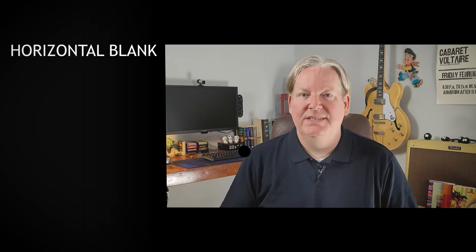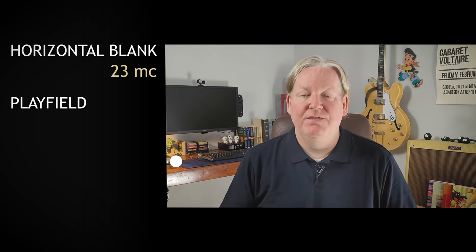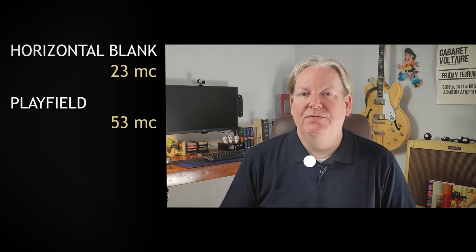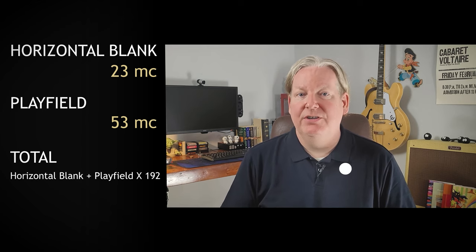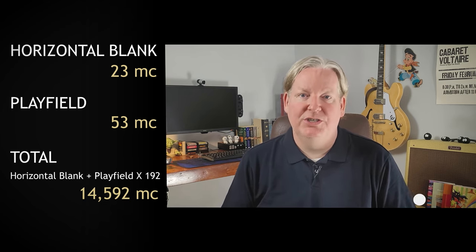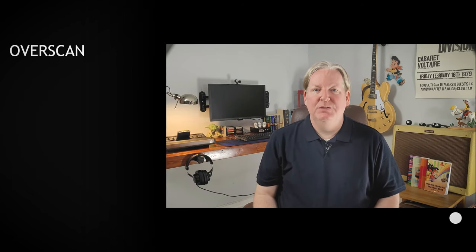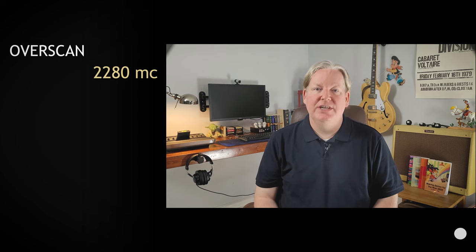Horizontal blank is the period when the beam is repositioning itself from the end of one scan line on the right to the next scan line on the left. This lasts for about 23 machine cycles for each scan line. The playfield is the visible portion of the CRT screen, about 53 machine cycles per scan line. Both horizontal blank and the playfield together are generally 192 scan lines for NTSC CRTs, for a total of 14,592 machine cycles. Overscan is the period when the beam is generally below the visible portion of most CRT televisions, lasting 30 scan lines or 2,280 machine cycles.